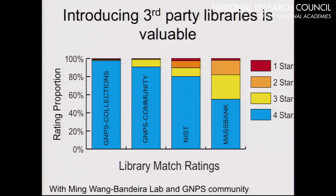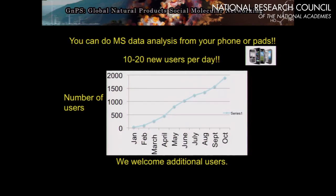We have a one-to-four-star system: one star is an incorrect identification, two stars means not enough information to tell, three stars means it could be an isomer or it could be correct, and four stars is correct. Based on the scoring criteria we've used, with automatic feedback we're now at 91% of the community giving it four-star ratings, four percent giving three stars, four percent two stars, and one percent deemed incorrect.